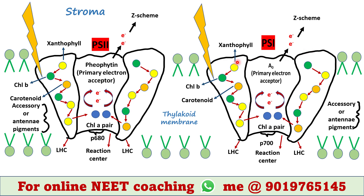Two photosystems, PS1 and PS2, take part in the light reaction and are placed in the thylakoid membrane. Although PS2 works first during photosynthesis, it is named PS2 since it was discovered later than PS1. The structures of PS2 and PS1 are almost the same with very little difference.